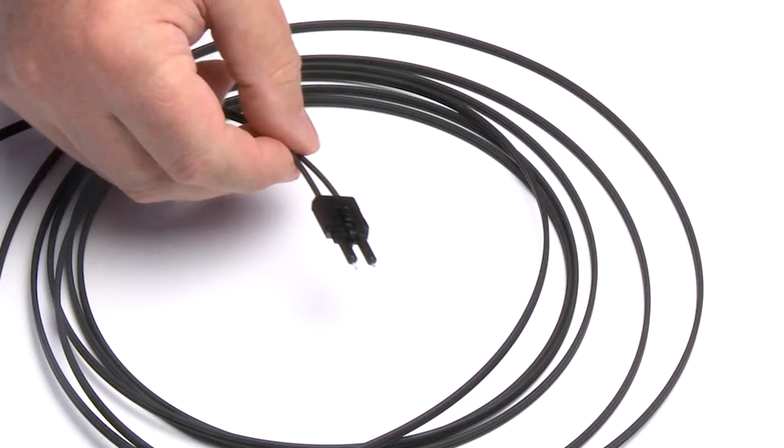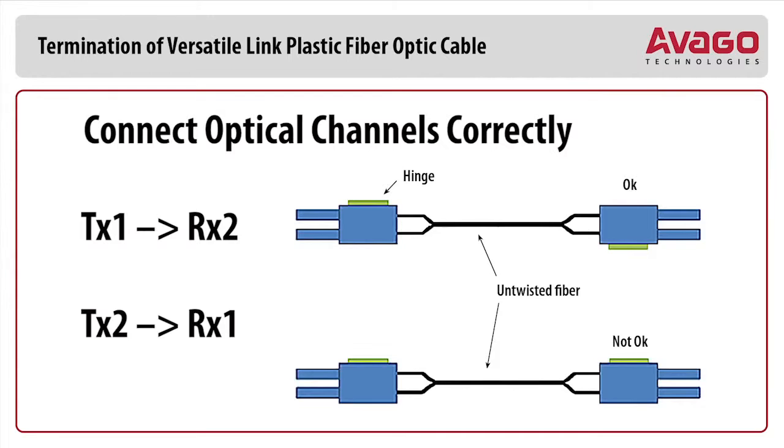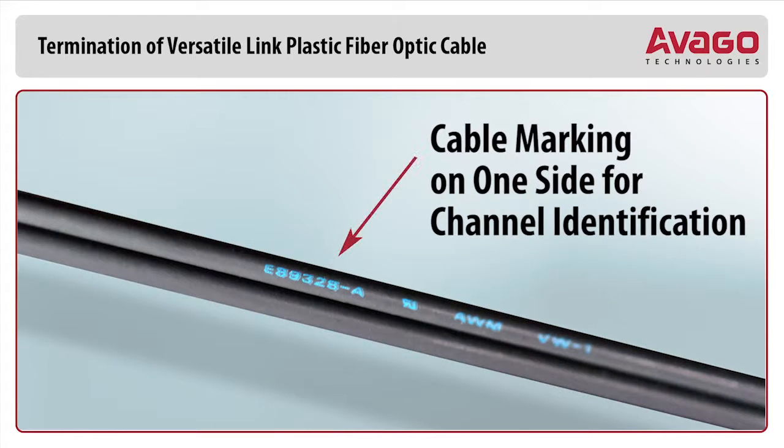During the insertion of the fiber into the connector, make sure that the orientation of the connector is correct, so the optical channels are connected correctly: TX1 to RX2, TX2 to RX1. Note, for longer cable lengths, the printed markings on only one of the channel jackets will help to correctly orientate the connector.